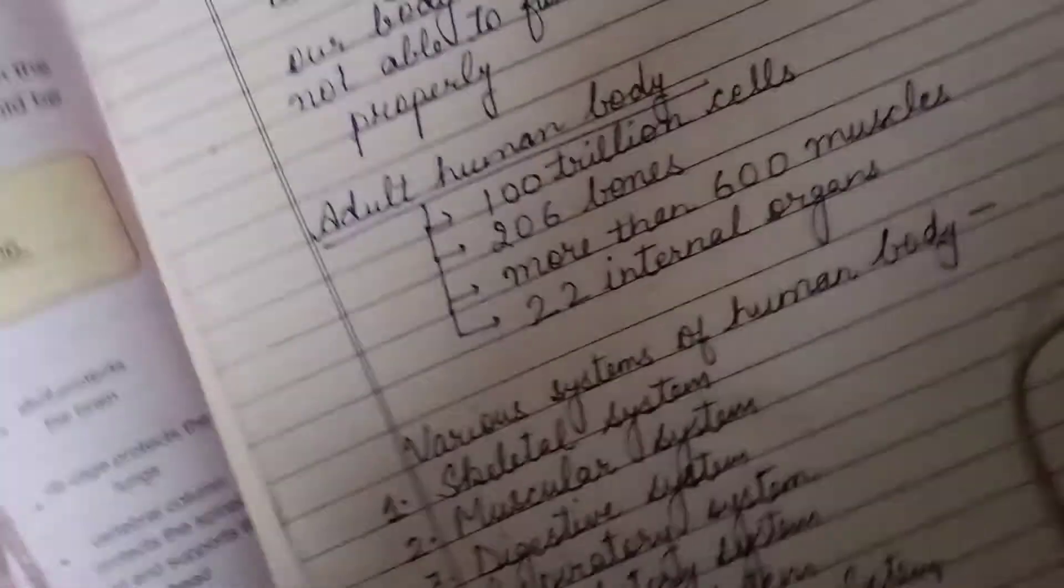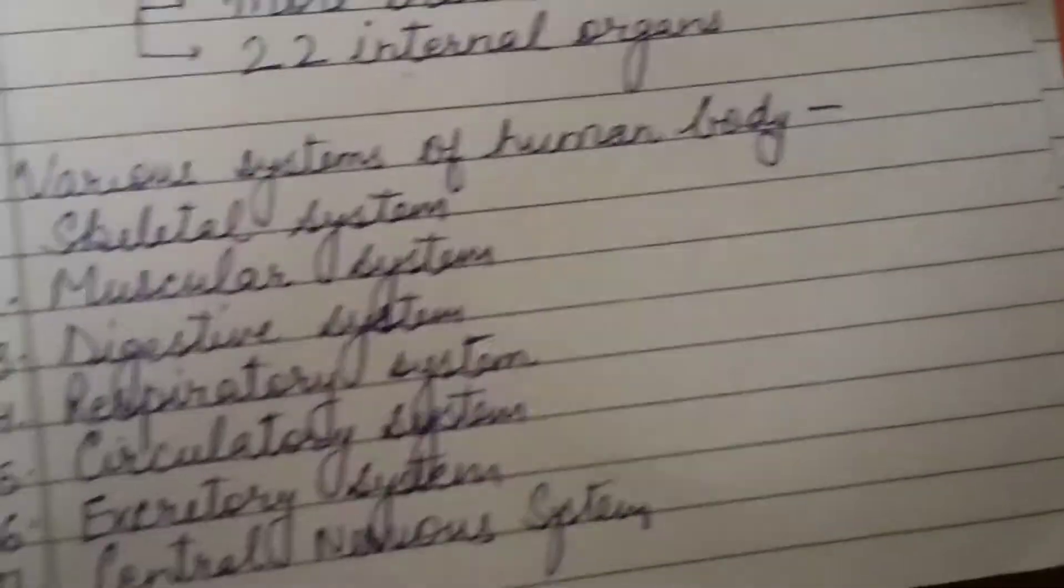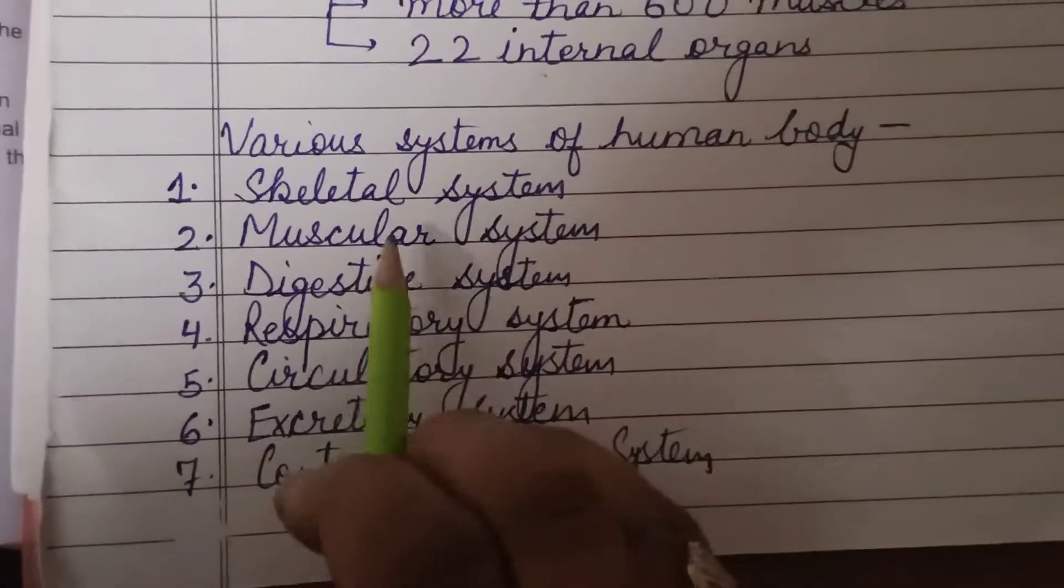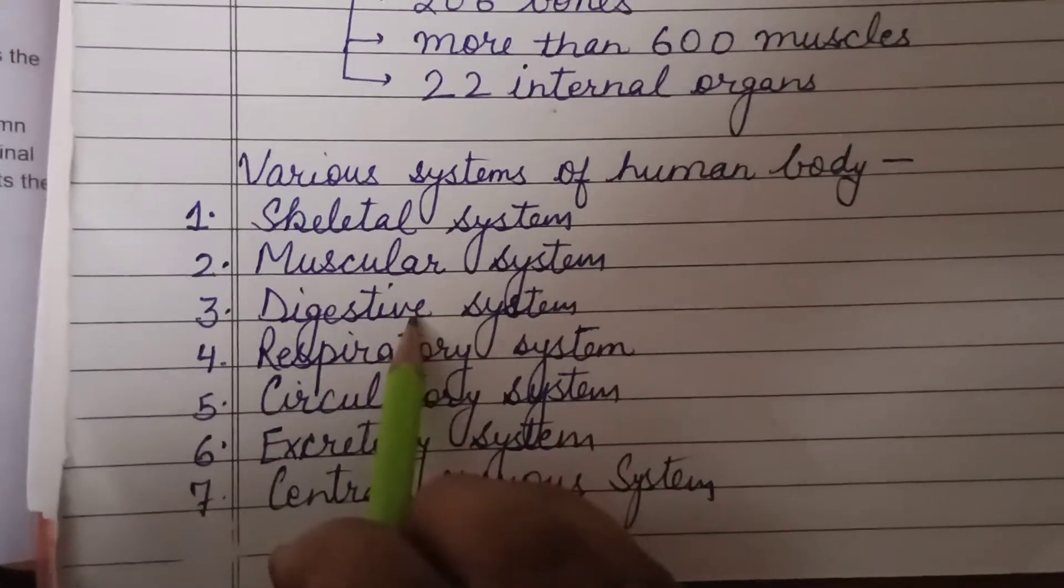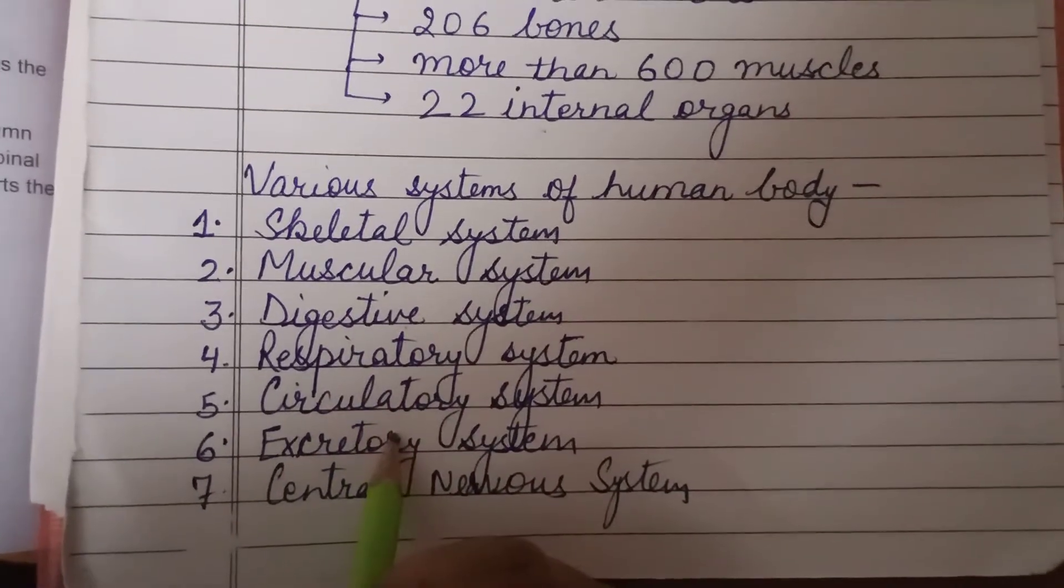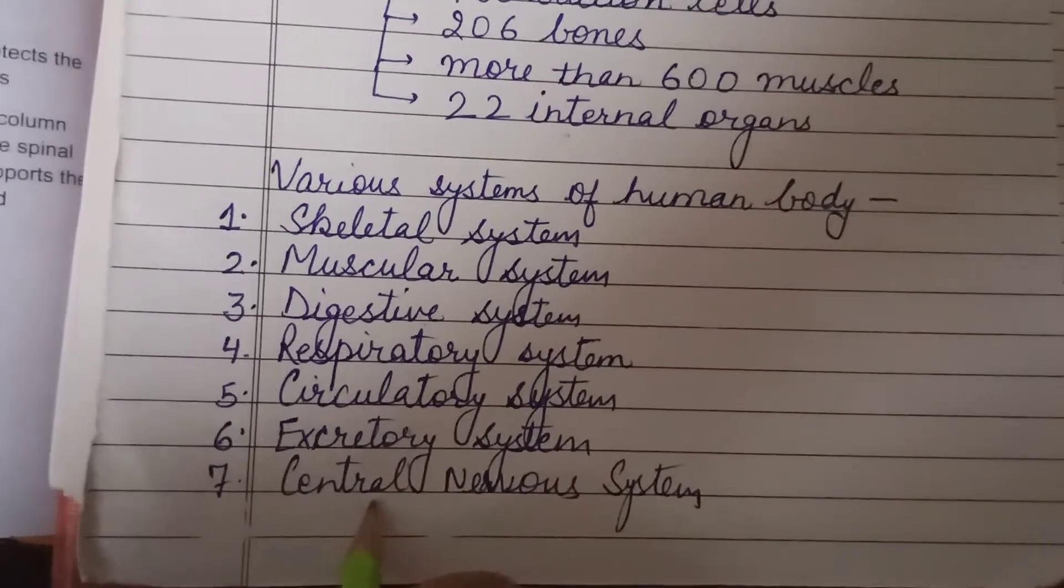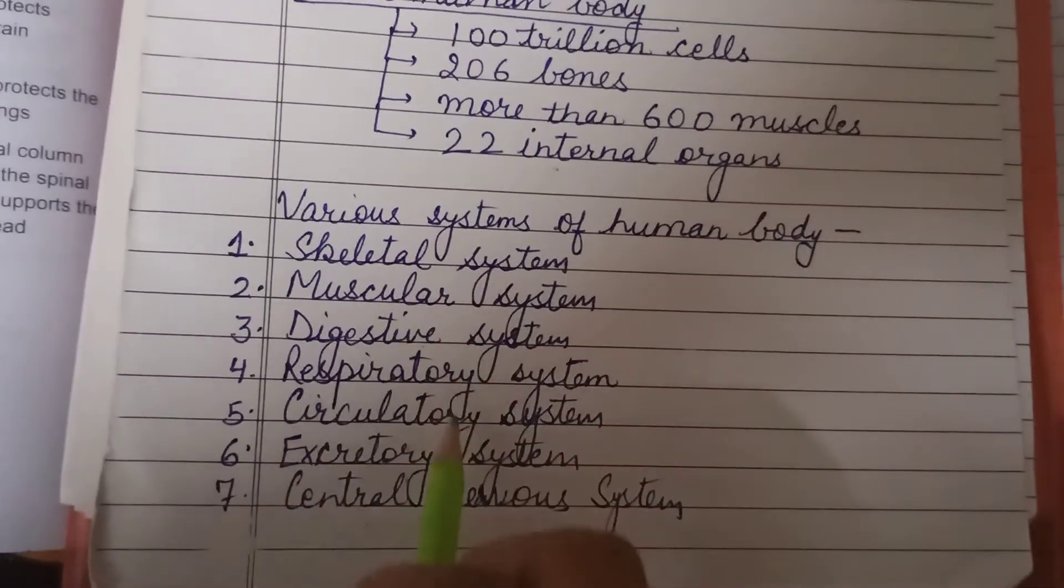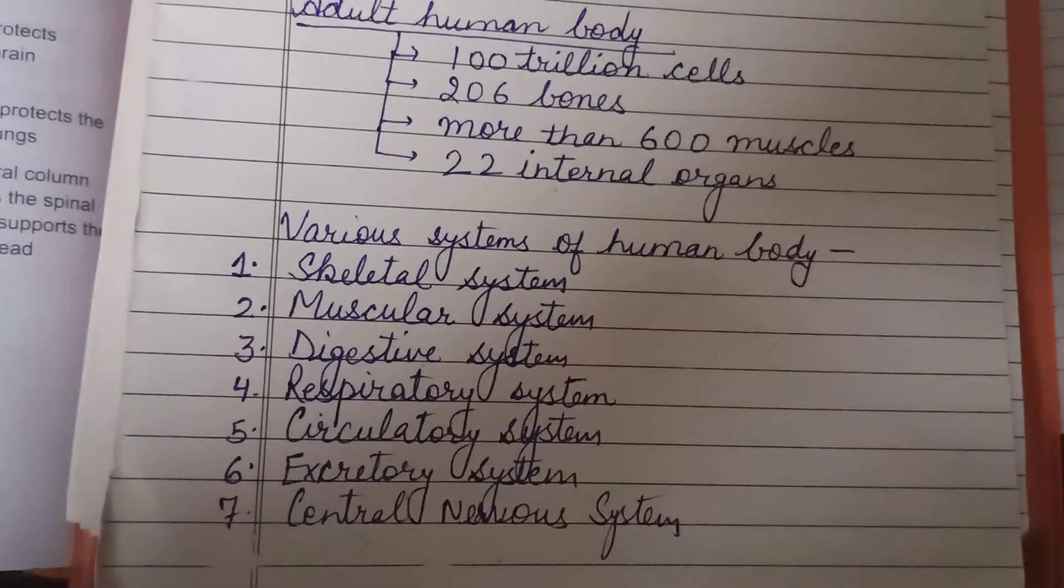So in our body, we have various systems. These are skeletal system, muscular system, digestive system, respiratory system, circulatory system, excretory system, and central nervous system. So students, we will read all these systems one by one.